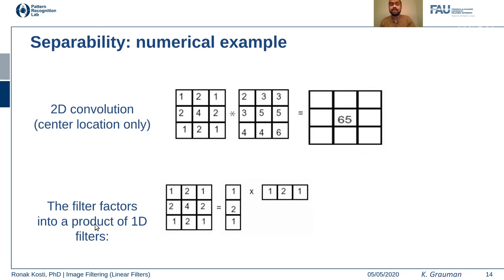Let's take a numerical example. Here is a Gaussian kernel where the center value is high and values decrease as you go away from the center. For 2D convolution at a specific image location, you multiply each corresponding value and sum them up to find the output value at that location. If you separate the 2D kernel into a column vector and a row vector and multiply them, you get back the original 2D Gaussian kernel.